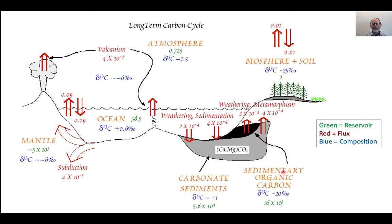This is the long-term carbon cycle. The green values are reservoirs in units of 10^15 grams. Red is the flux of carbon, and blue is the delta C-13 value of that carbon reservoir. You can see there's an atmosphere, the biosphere, sedimentary organic carbon, sedimentary carbonates, the ocean, and the mantle.